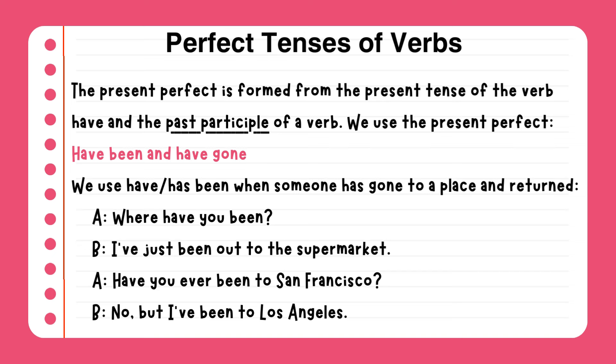Have been and have gone. We use have or has been when someone has gone to a place and returned. Example: Where have you been? I've just been out to the supermarket. Have you ever been to San Francisco? No, but I've been to Los Angeles.